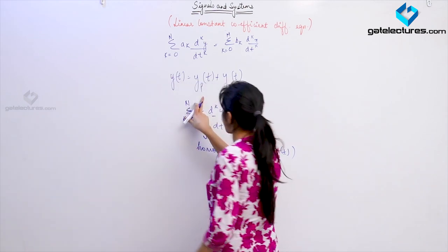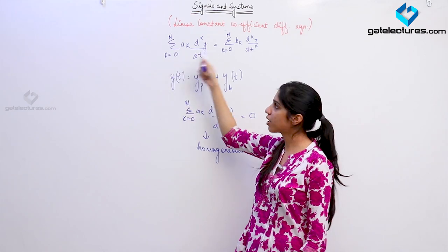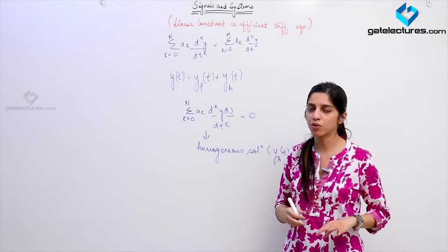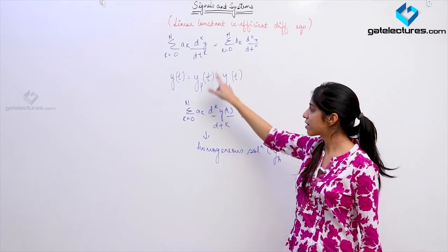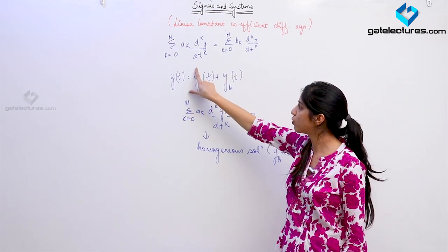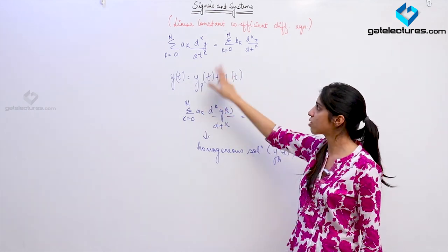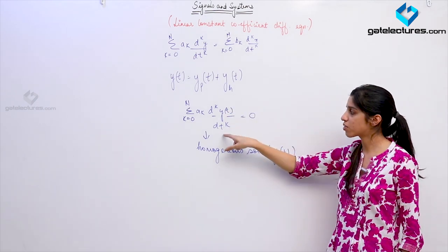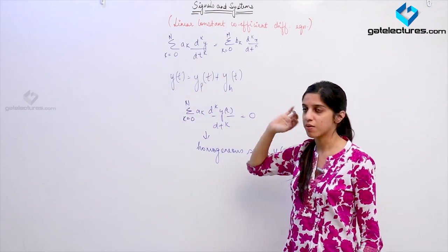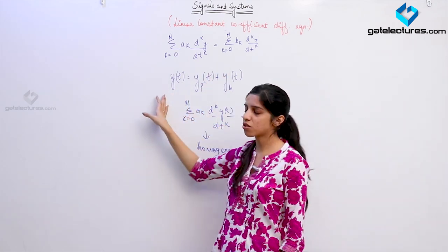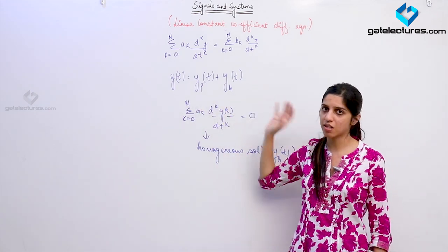The particular solution corresponds to the input you are applying. The homogeneous solution for the equation is going to be the same regardless of whatever input you are applying — it does not depend on the input. The particular solution is going to be unique for each different input you apply — it depends on the input. The homogeneous solution depends on the system — only on the LHS of this equation.